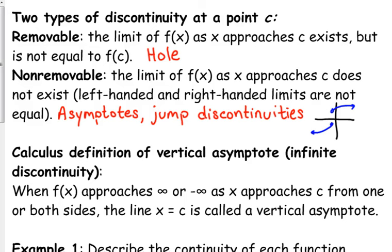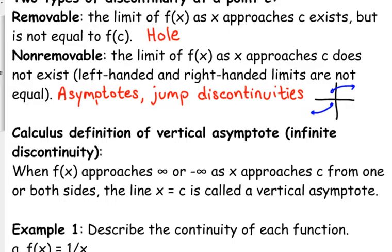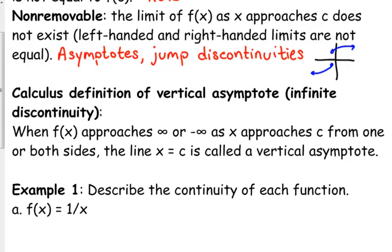So, if your function approaches positive or negative infinity as you approach some c-value from one or both sides, then that c-value is a vertical asymptote — you're either going up or going down. That's your vertical asymptote, or an infinite discontinuity.